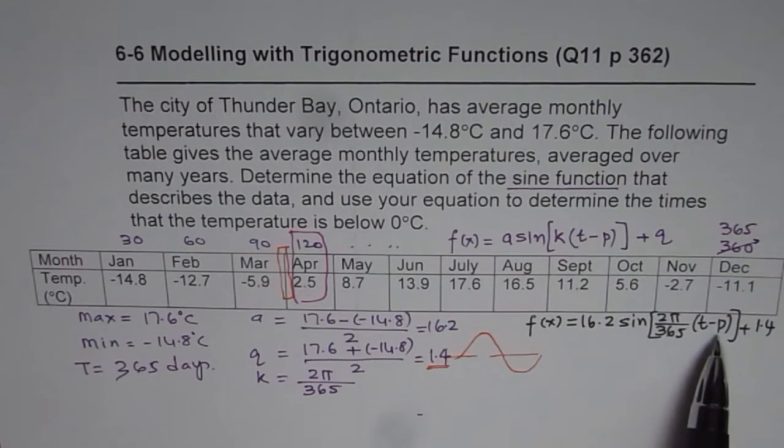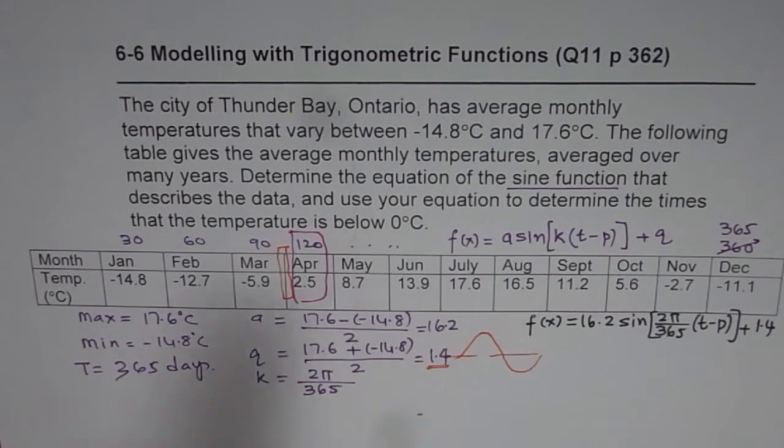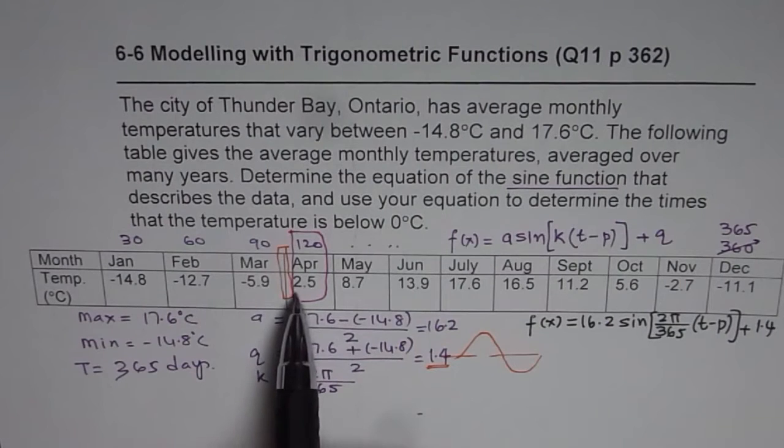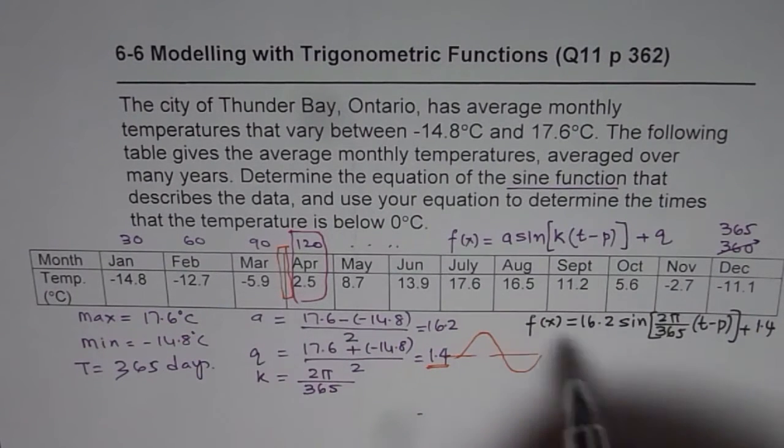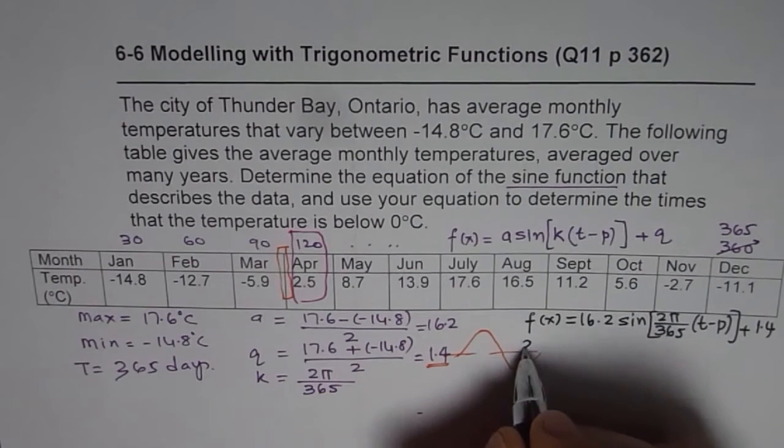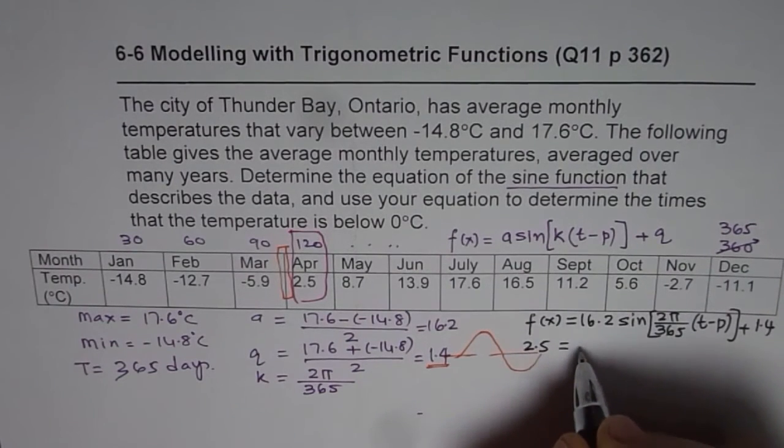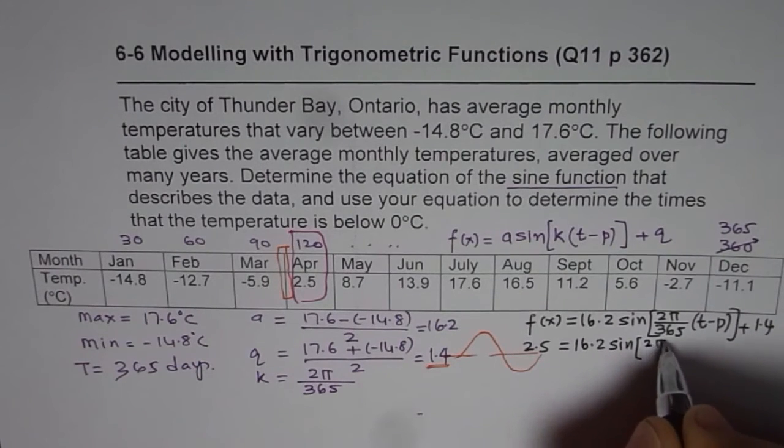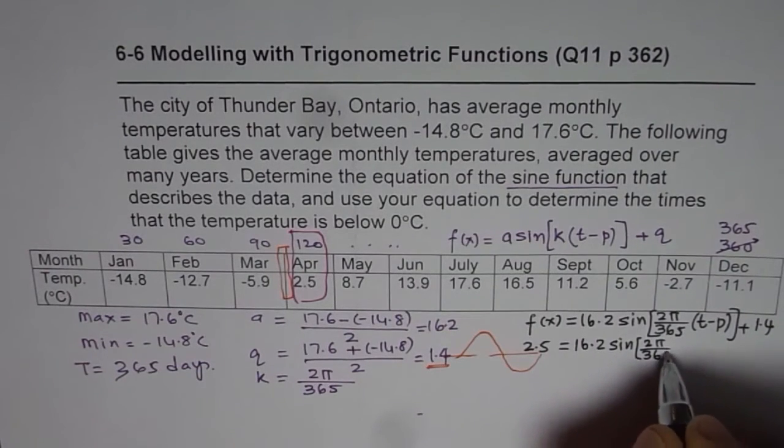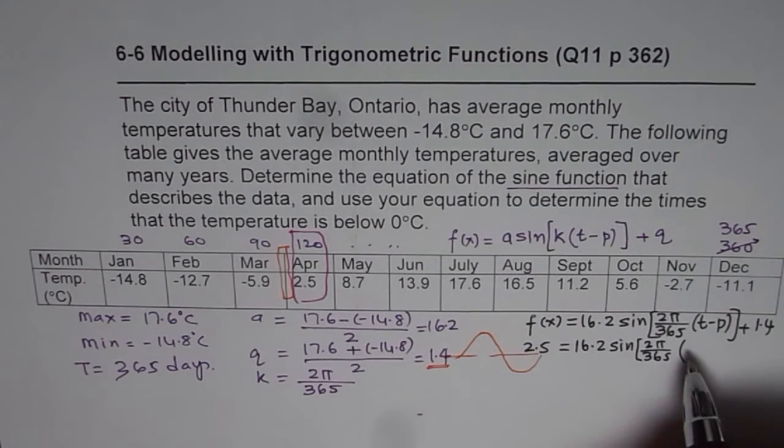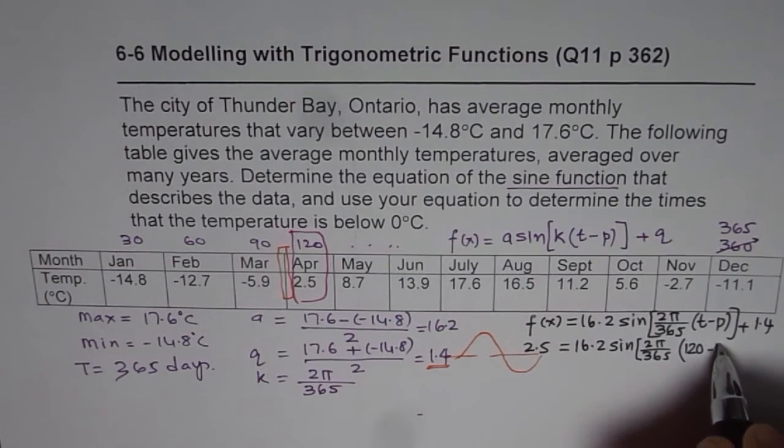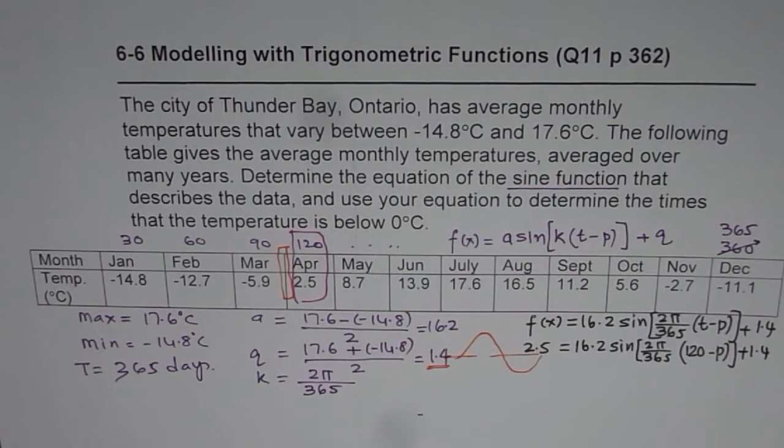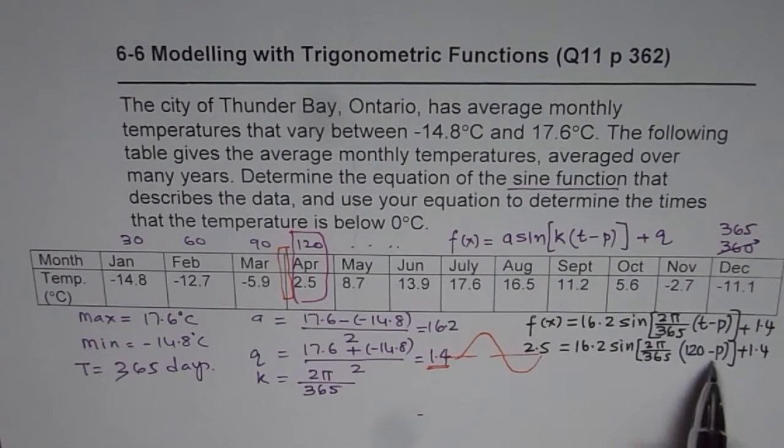Now to find the value of p, what I am going to do is, I am going to use this point, where time is 120 and the value is 2.5. So if I write 2.5 here, I get 2.5 equals to 16.2 sine of 2π over 365, now time is 120, so I will write 120 minus p plus 1.4. Now we need to solve this equation to find the value of p.